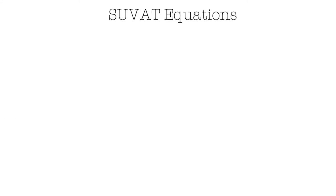Now let's move on to SUVAT equations. Before we begin, there is a key assumption we must make. SUVAT equations can only be applied to objects that are moving with a constant acceleration. Consider a falling motion — we know that an object under freefall is experiencing a constant acceleration caused by the Earth's gravity. So the assumption we must make is that acceleration is constant. But you should note that G is only constant near the Earth's surface.